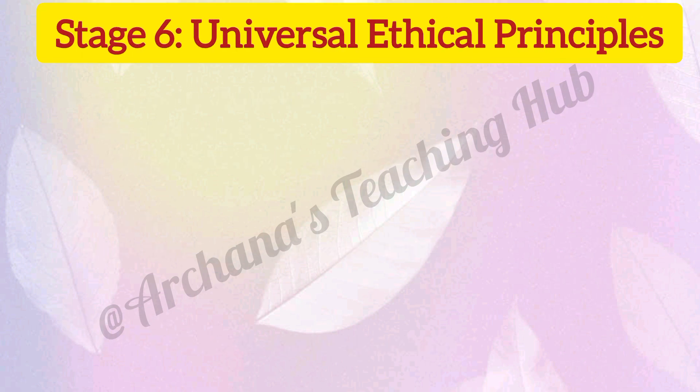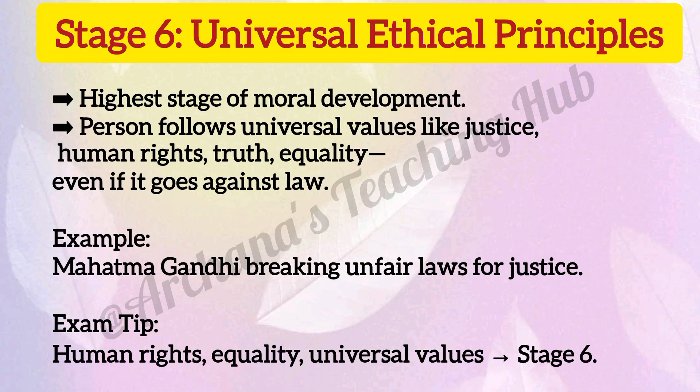Stage 6: Universal ethical principles — the highest stage of moral development. The person follows universal values like justice, human rights, truth, and equality, even if it goes against the law. For example, Mahatma Gandhi breaking unfair laws for justice. Key ideas: human rights, equality, universal values equals Stage 6.